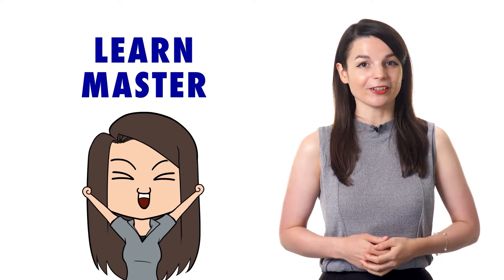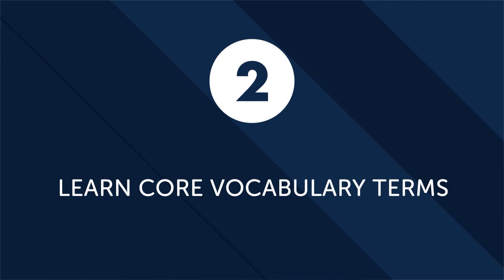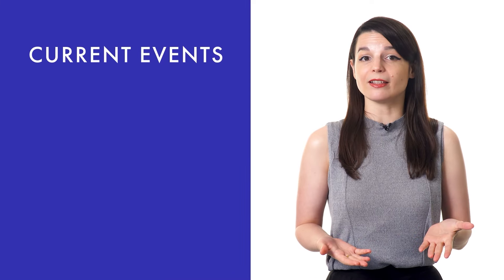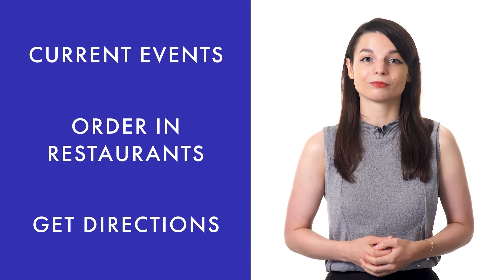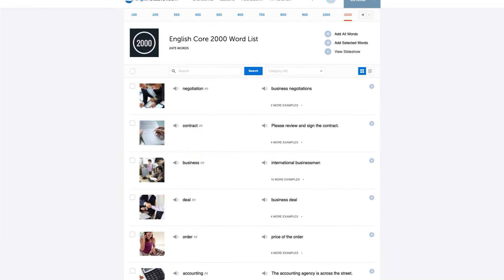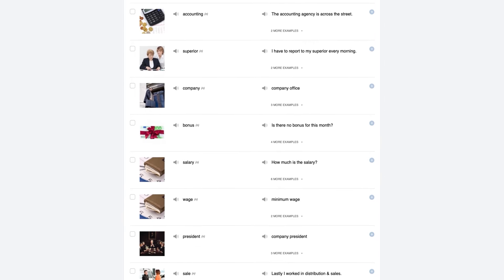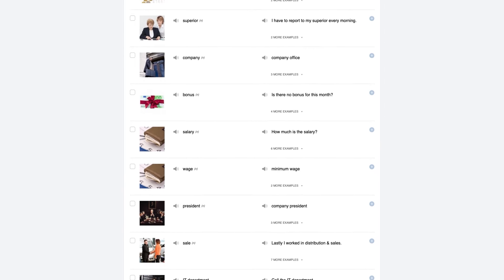Remember, the more conversations you have, the quicker you will learn and master the language. Second: learn core vocabulary terms as quickly as possible. You don't need thousands of words — with just a couple hundred words you could have a very basic conversation, and by learning one thousand to two thousand words, you could carry a conversation with a native speaker about current events, order in restaurants, and even get directions. Check out our two thousand common words core list.